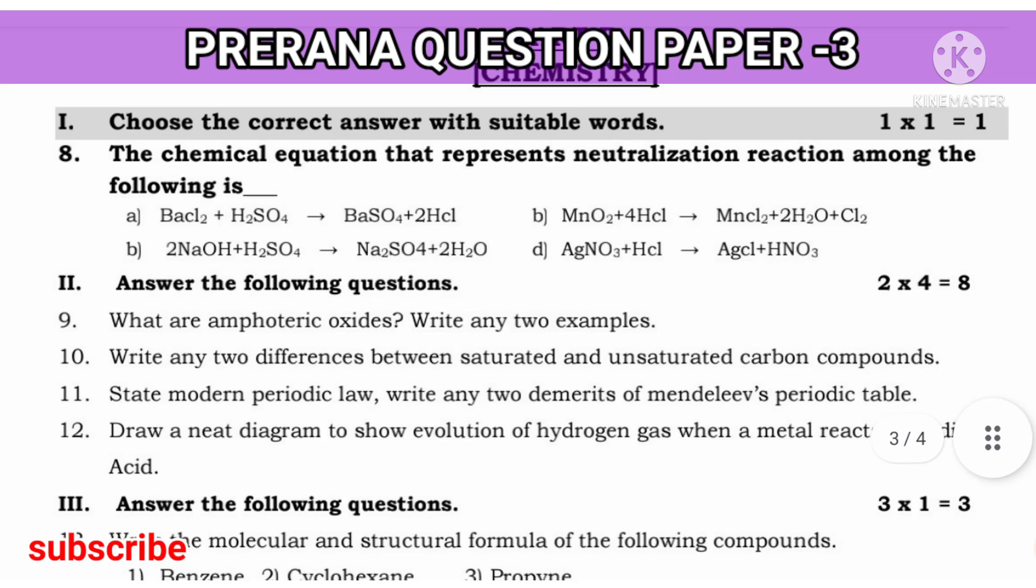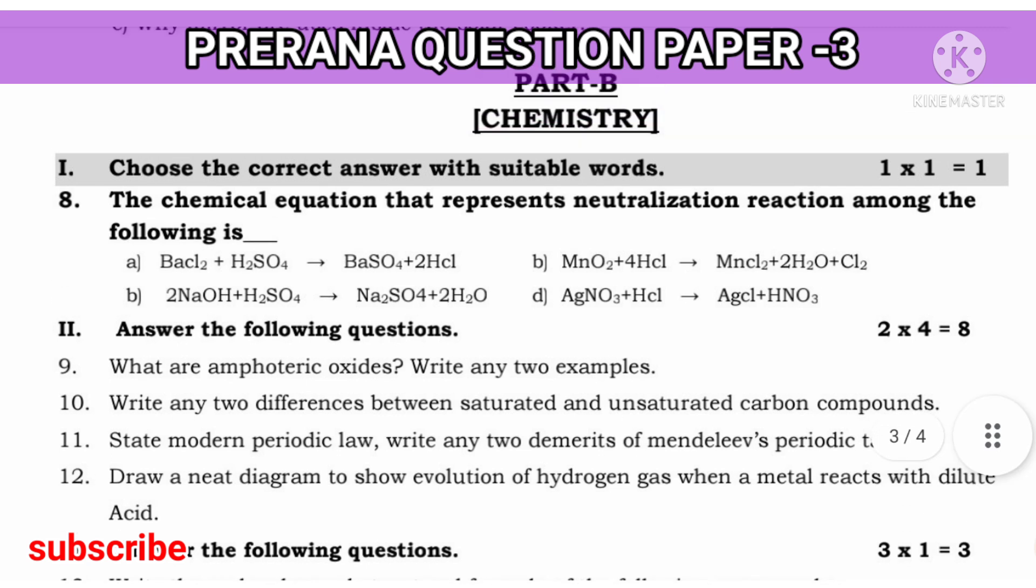Next, chemistry part. The chemical equation that represents the neutralization reaction among the following. I have already told you, neutralization reaction is acid base reaction to give salt and water. So, you must observe this, where is acid and where is base. And also, try to answer.